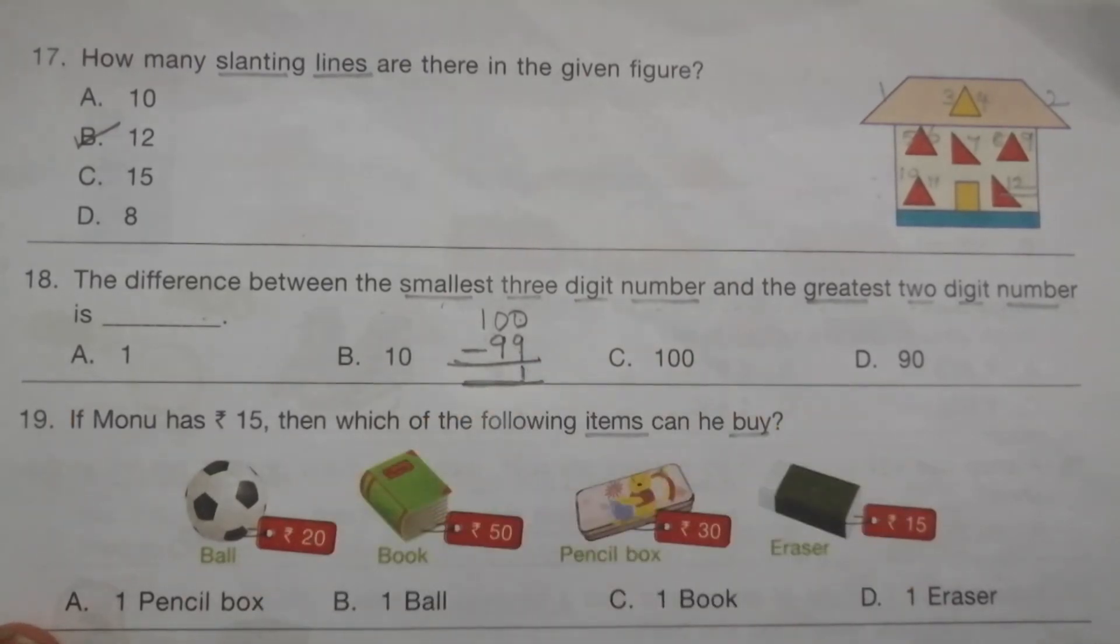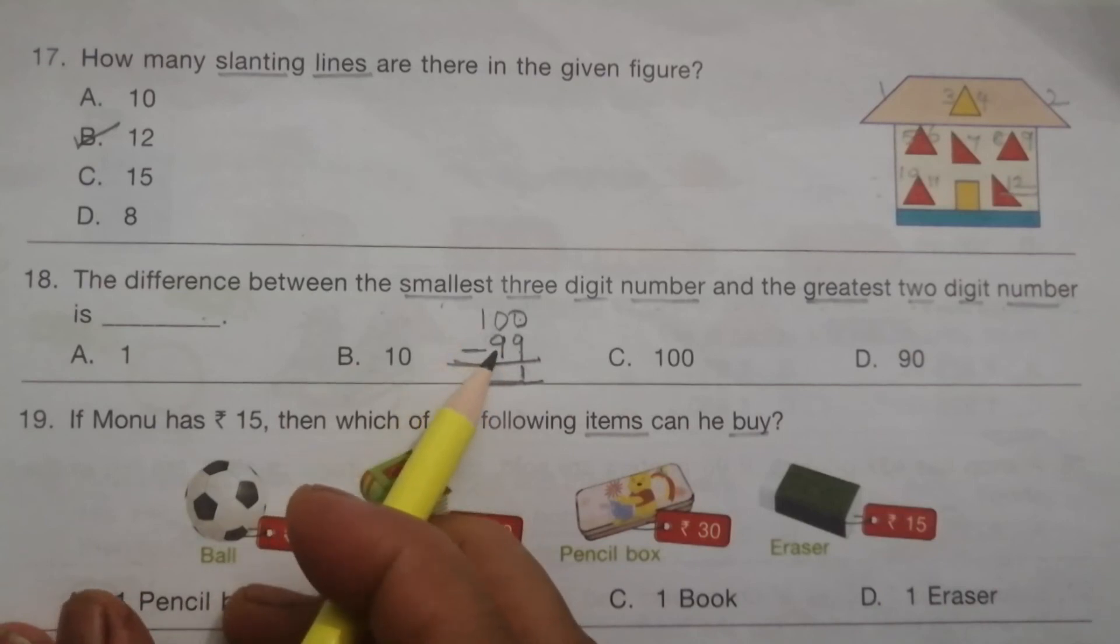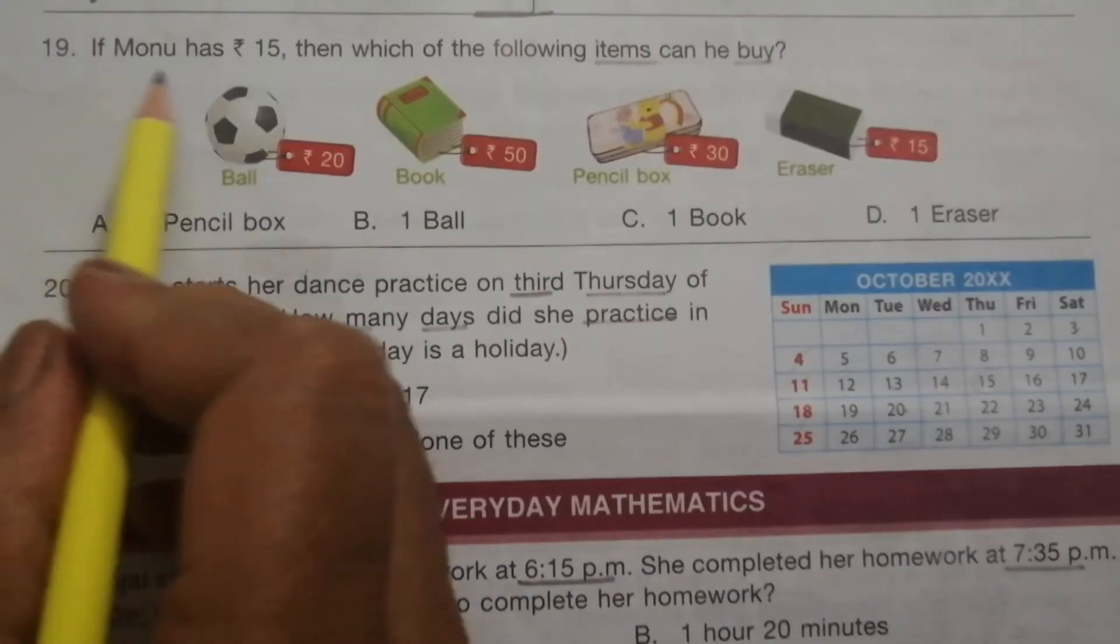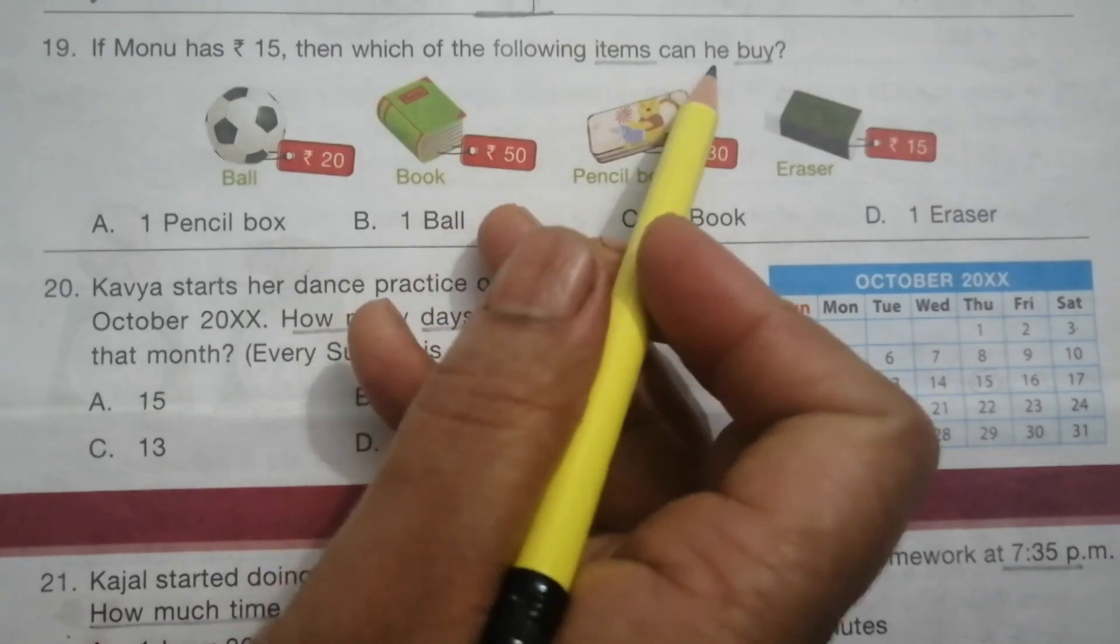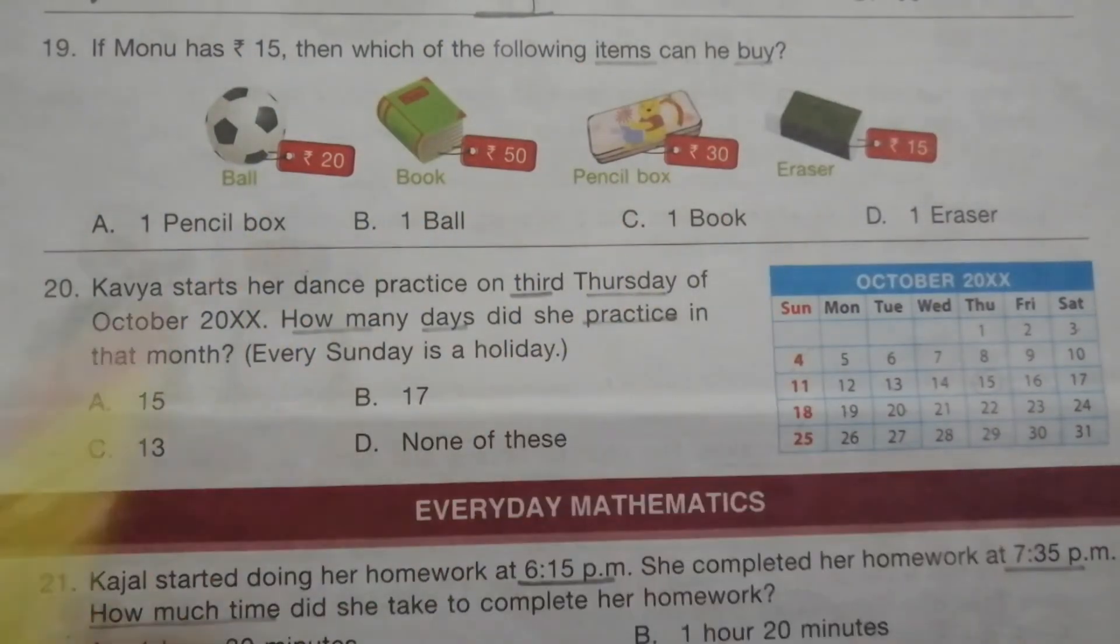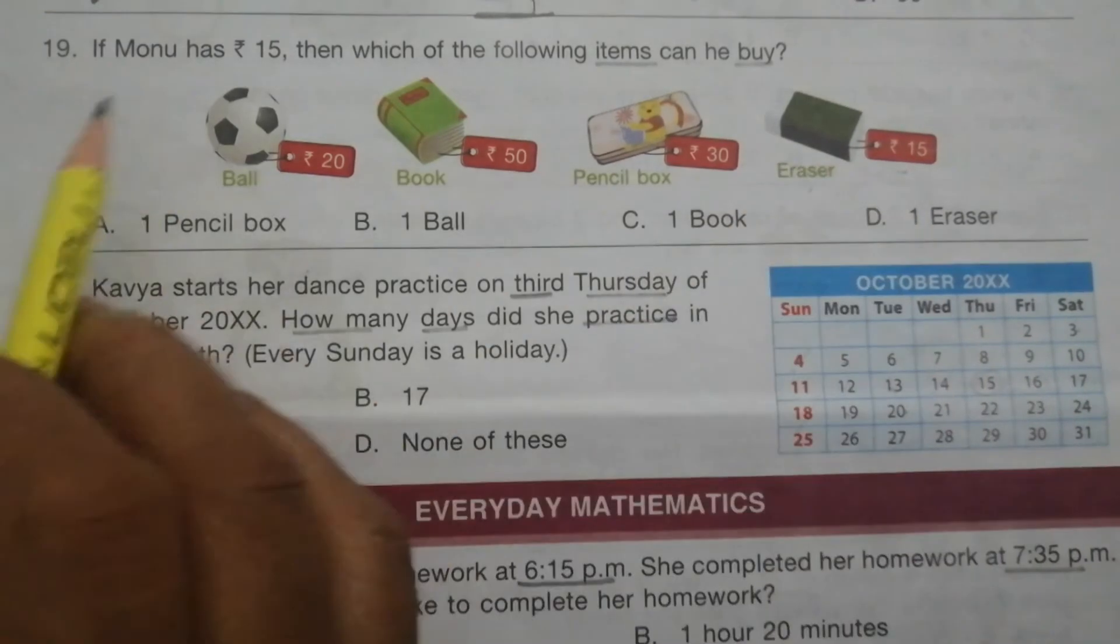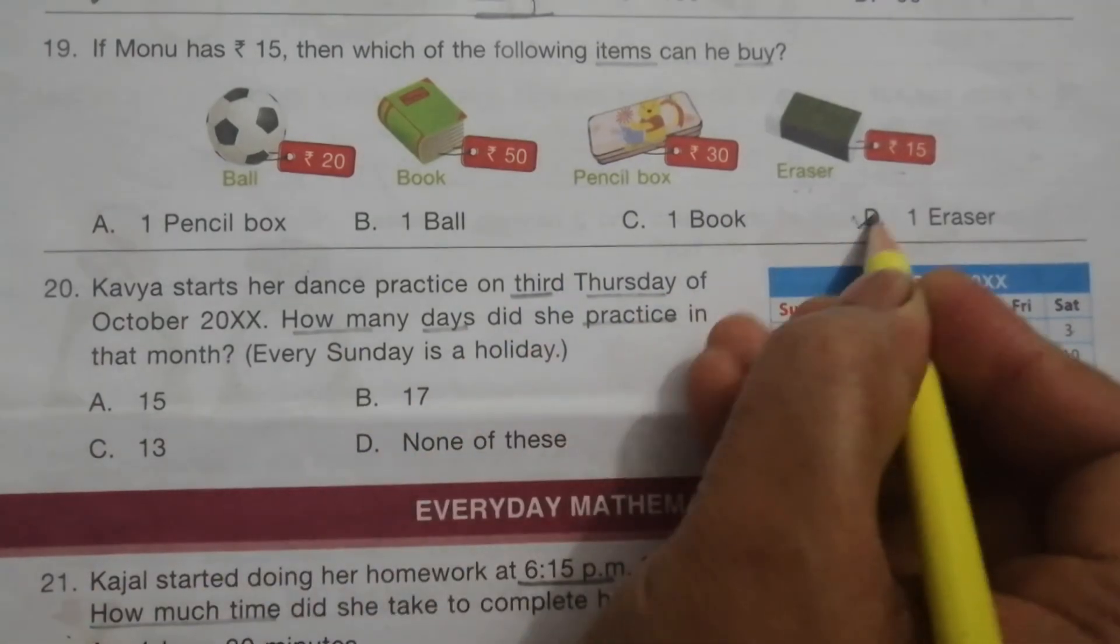Problem 18: The difference between the smallest 3-digit number and the greatest 2-digit number is what? Smallest 3-digit number is 100, greatest 2-digit number is 99. Difference means we subtract: the answer is 1. Otherwise we can use predecessor concept: 100 minus 1 is 99. Answer is A, 1. Problem 19: If Monu has rupees 15, which item can he buy? The cost of eraser is rupees 15. So Monu can buy the eraser only. Answer is D, 1 eraser.